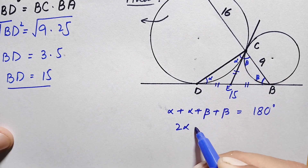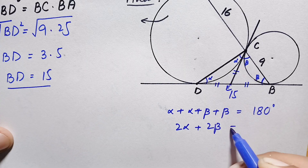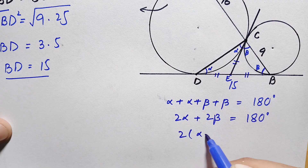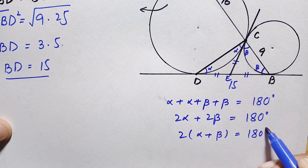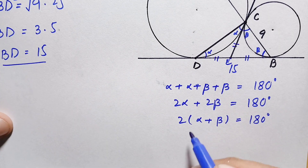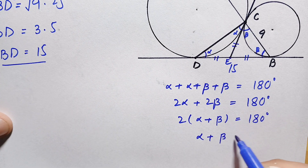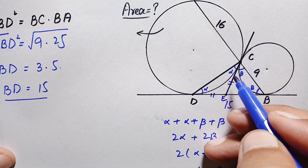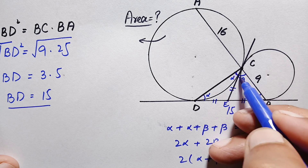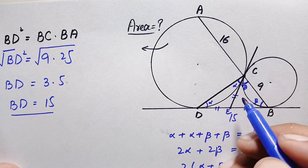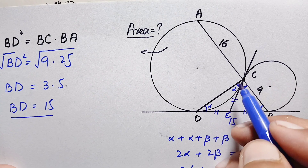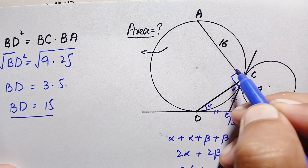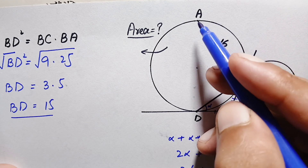So from triangle BCD, we write: alpha + alpha + beta + beta = 180 degrees, which gives 2 alpha + 2 beta = 180 degrees. Dividing both sides by 2, alpha + beta = 90 degrees. So the angle at C, which is the sum of alpha and beta, is a 90-degree right angle. Since angles on a straight line sum to 180 degrees, the adjacent angle is also 90 degrees.